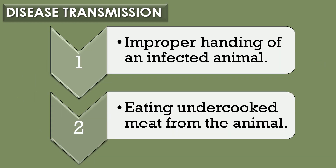Disease transmission: Bacillus anthracis is commonly found in soil in low amounts. It affects livestock and can be transmitted to humans through improper handling of infected animals or by eating undercooked meat from the animal. It is rare for human-to-human infection.